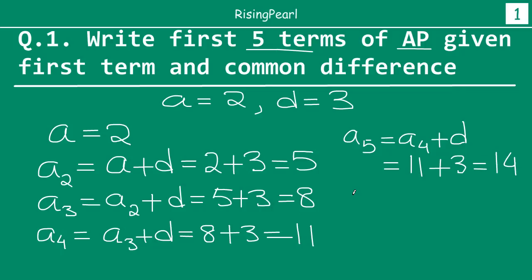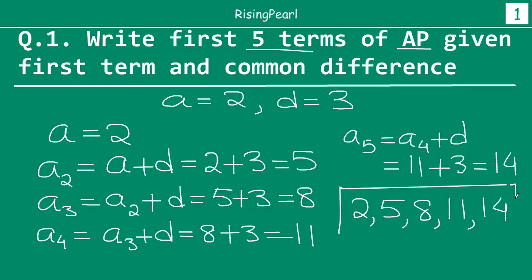So in other words, our arithmetic progression series will look like: first term is 2, second term is 5, third term is 8, fourth term is 11, fifth term is 14. So this will be the answer if we have to write out the first 5 terms of an arithmetic progression where the first term is 2 and the common difference is 3.